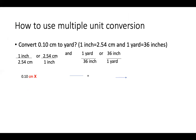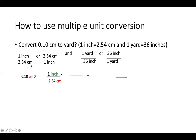The next step is how to use multiple unit conversions. For example, convert 0.10 centimeter to yard. They provide two conversion factors. The first one we write in the two ways: one inch over 2.54 centimeter, or 2.54 centimeter over one inch. We start with the given number, then decide which form to use. Since I have centimeter in the given number, my denominator in the next part should be centimeter, matching my previous numerator.